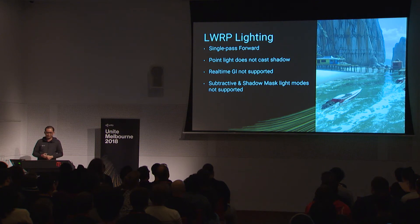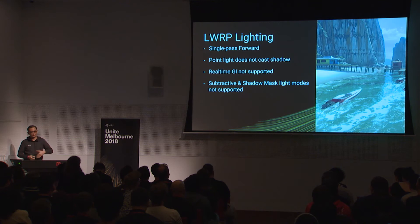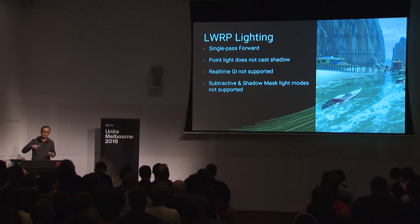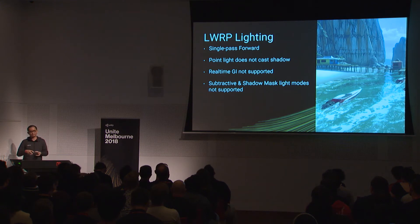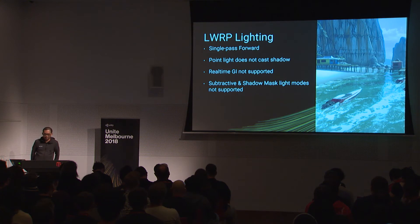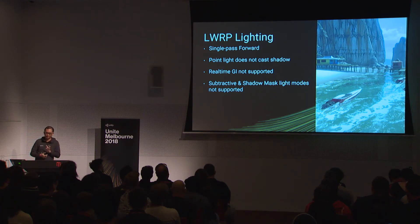The Lightweight Render Pipeline is a single-pass forward renderer, meaning all lights are shaded in one single pass instead of multiple passes. This is more efficient than the built-in forward path. However, point lights don't cast shadows, there's no real-time GI, and you are limited to indirect lighting mode only — subtractive and shadow mask light modes are not supported.